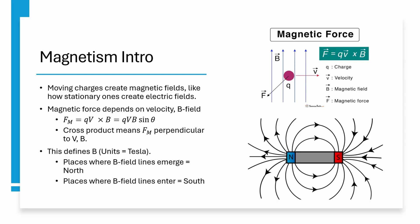This equation is what defines the B-field. In the bottom picture we see an example of B-field lines for a bar magnet. Magnetic north is defined as where B-field lines emerge and south is where B-field lines enter. Every magnet has a north and a south. Magnetic monopoles don't exist.